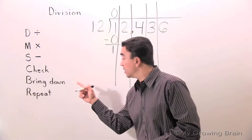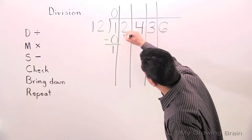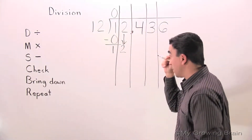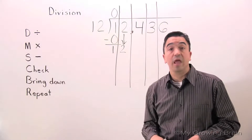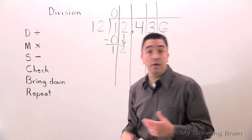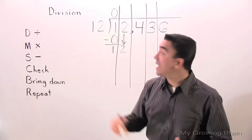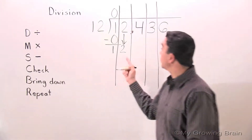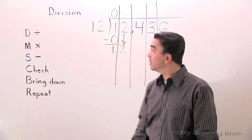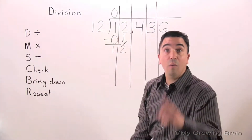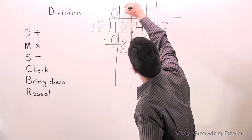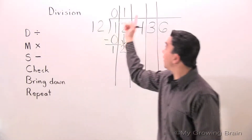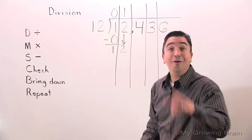Next step: Bring down. Next step: Repeat — go all the way back to the top. Divide. 12 divided by 12 equals 1. Multiply: 12 times 1 equals 12.